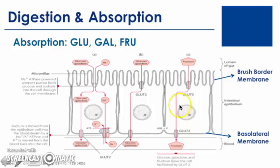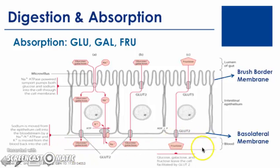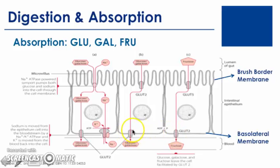After the monosaccharides enter the enterocyte — fructose entering via GLUT5, and galactose and glucose entering via SGLT1 — they need to exit the intestinal cell through the basal lateral membrane. Once passed through the basal lateral membrane, the monosaccharides are present in the bloodstream. The primary channels used to transport the monosaccharides from the enterocyte into the bloodstream are the GLUT2 channels.